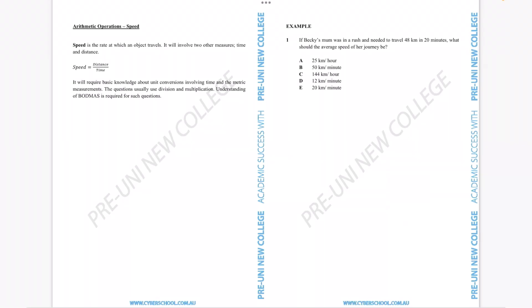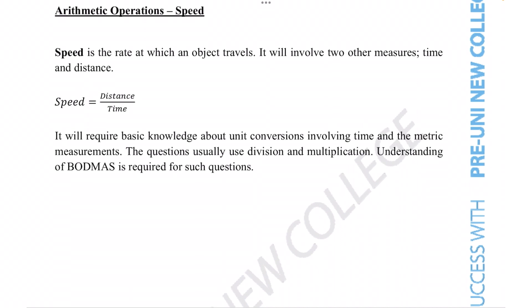Hello everyone. Welcome to this video all about arithmetic operations within the category of measurement and data. In particular, we're going to be looking at the category of speed. Speed is the rate at which an object travels. It will involve two other measures, time and distance. Speed questions require basic knowledge about unit conversions involving time and metric measurements. The questions usually use division and multiplication, and understanding of BODMAS is required.